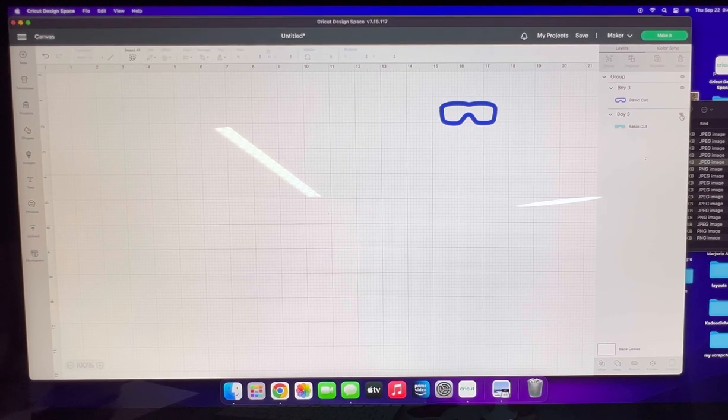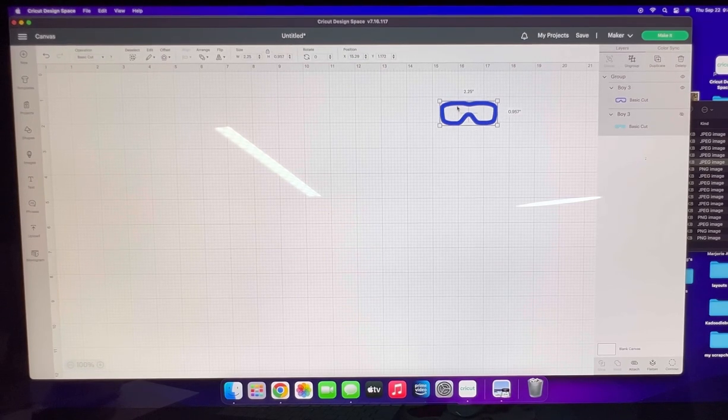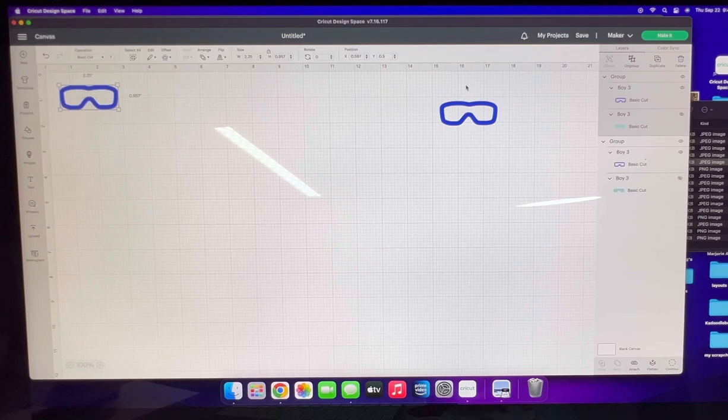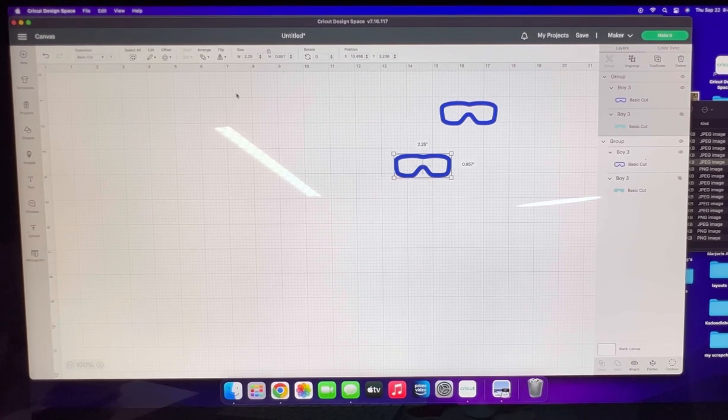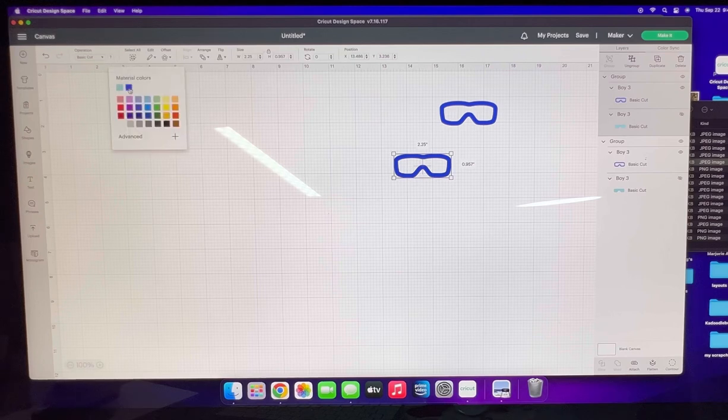So I either delete it or hide it. I then select my main piece and duplicate it, and I'm going to change the color because I do not want it in the same color as this.